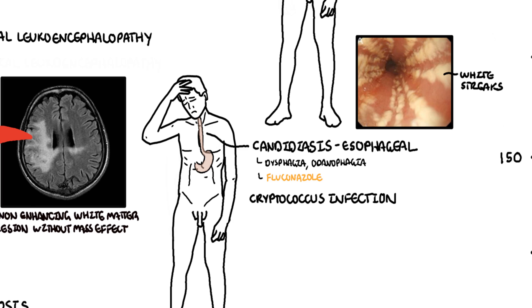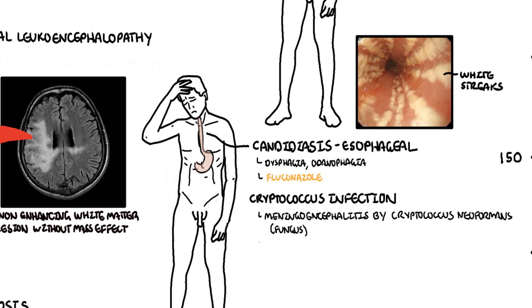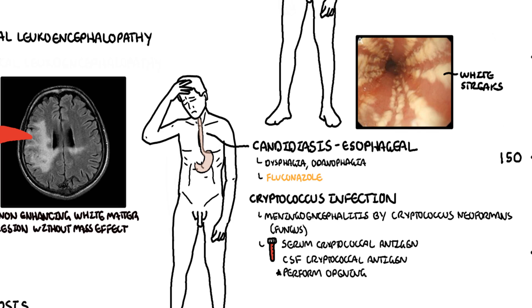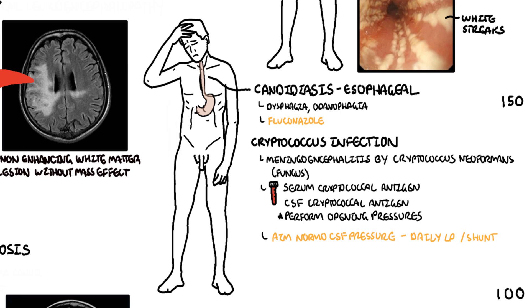Cryptococcus infections present as meningoencephalitis in HIV-infected patients. The organism is the fungus Cryptococcus neoformans. Symptoms include fevers, lethargy, and a stiff neck. Diagnosis involves positive serum cryptococcal antigens or a lumbar puncture showing cryptococcal antigens. It is important to measure opening pressures during lumbar puncture, with the main goal being to normalize intracranial pressure, aiming for 20 mmHg. This may require regular lumbar punctures or a ventricular shunt to drain fluid and reduce pressure. Treatment includes Amphotericin B followed by lifelong fluconazole.